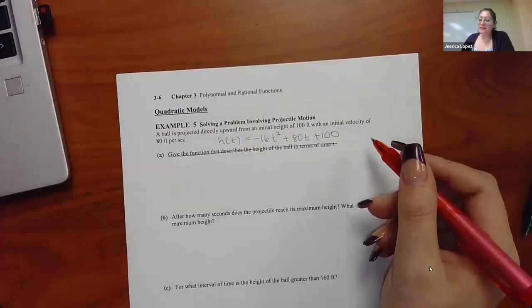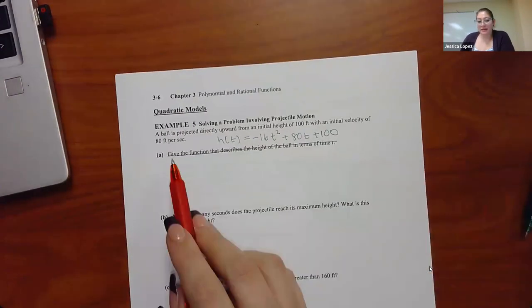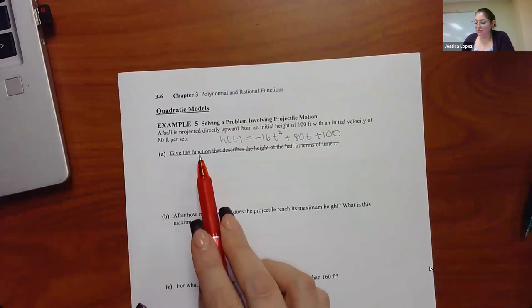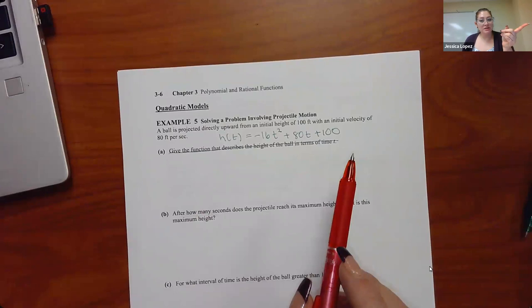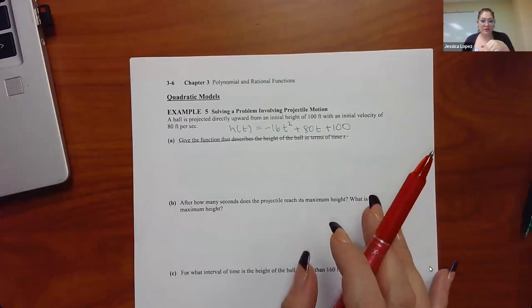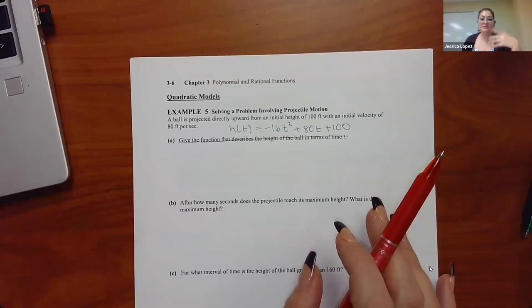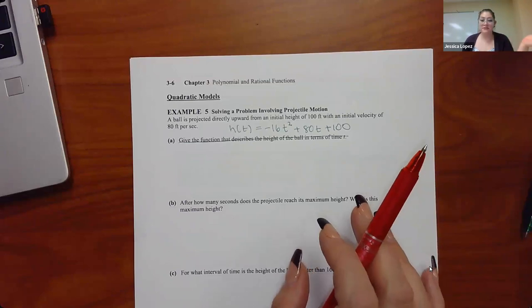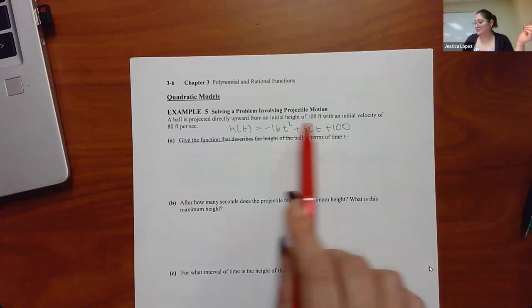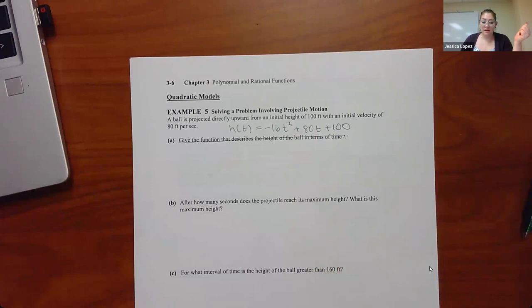In your homework, they always give you the equation — they never ask you to find it. So I'll give you the equation that goes with the problem. But before we do that, I need to talk about minimum and maximum values. If a is positive, the parabola opens upward, and the vertex is a minimum point — the x value is where the minimum occurs, and the y value is the minimum value. If a is negative, the parabola opens downward and the vertex is a maximum point.